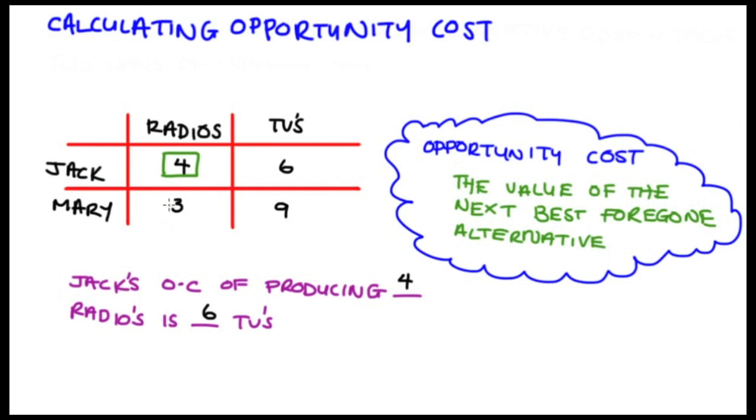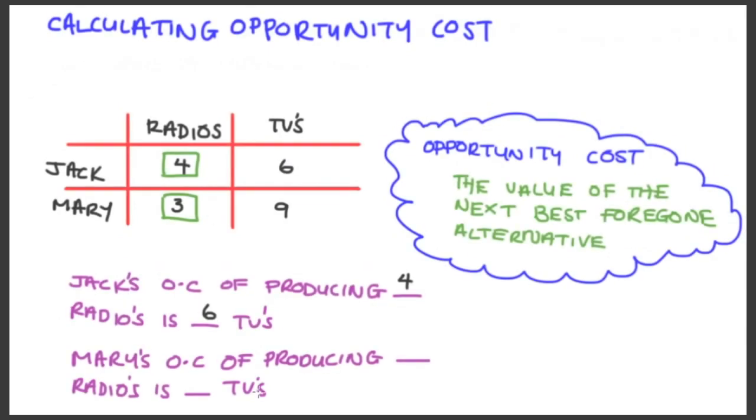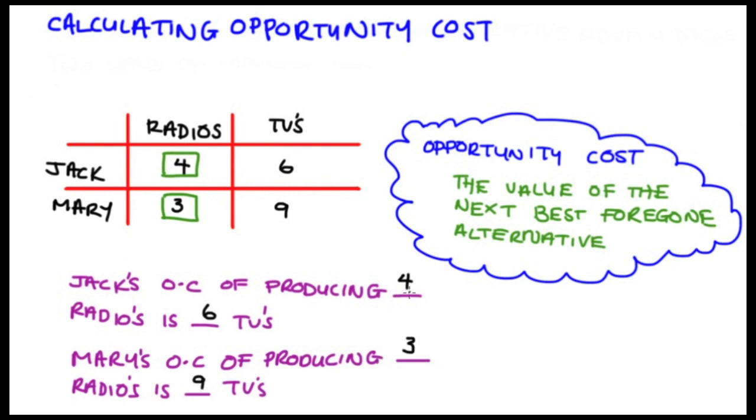Likewise, we can read off the table Mary's opportunity cost of producing three radios—that's just nine TVs, because that's her production possibilities, the maximum amount that she could make. So this is perfectly fine in terms of statements of opportunity cost.